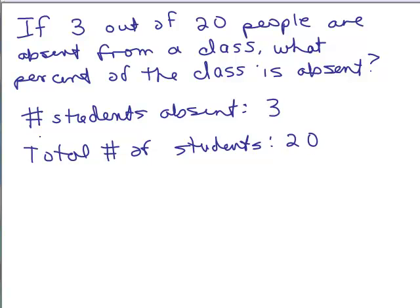We can write that as a portion, the total number of students absent over the total number of students. So I'm going to write that as 3 over 20. Now, remember, if you want to write that as a percent, it's as if you had a hundred students, like what would the number of students be absent?